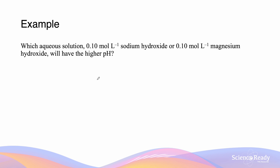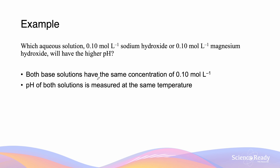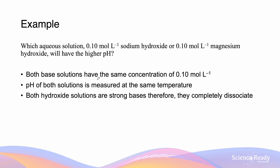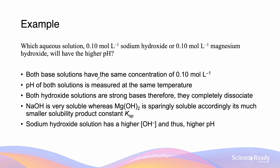Next, we compare a 0.10 mole per liter solution of sodium hydroxide with a 0.10 mole per liter solution of magnesium hydroxide. Both have the same concentration and are measured at the same temperature, and both are strong bases that completely dissociate. However, NaOH is a group 1 hydroxide and is very soluble, while Mg(OH)₂ is a group 2 alkaline earth hydroxide and only sparingly soluble. As a result, the sodium hydroxide solution has a higher OH⁻ concentration because it can dissociate more fully, and thus for this equimolar solution, sodium hydroxide will have a higher pH.